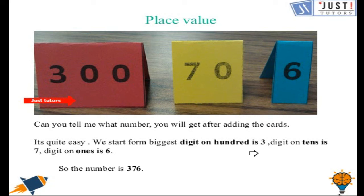So the biggest digit on 100 is 3. Digit on 10s is 7. And digit on 1s is 6. So the number is 376.